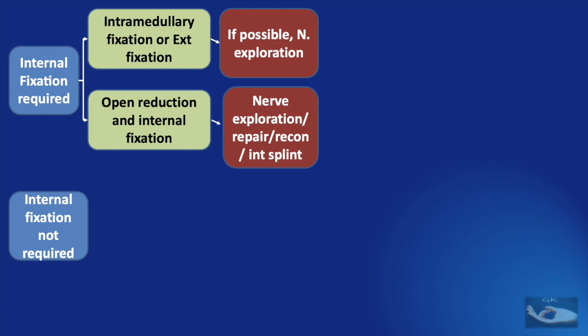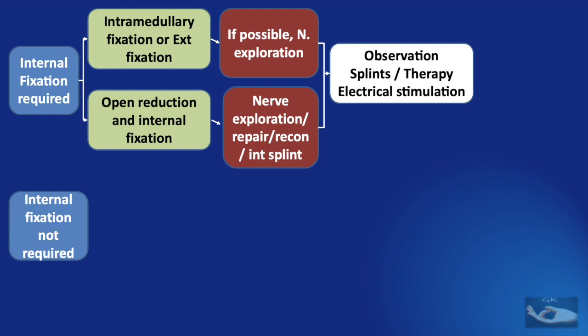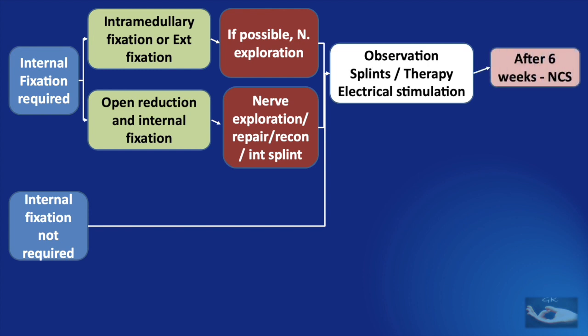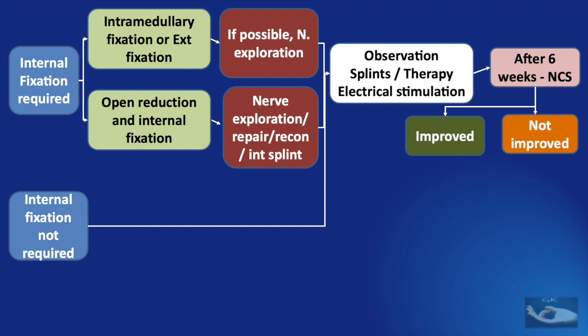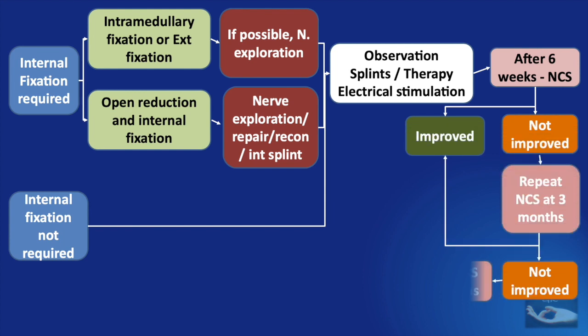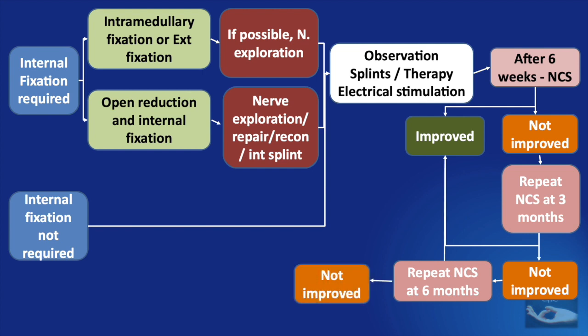If necessary, internal splinting can be done according to the principles elucidated in the video on the decision making process. Even if the nerve is not injured, care must be taken during the procedure to protect the nerve adequately. Whatever procedure has been done, it must be followed up with observation, adequate splints, therapy, and electrical stimulation. If the fracture does not require internal fixation, external support is given and must be followed up with observation, splints, therapy, and electrical stimulation. A nerve conduction study needs to be done after 6 weeks, again at 3 months, and at 6 months to look for improvement. If there is no recovery by 6 months, a tendon transfer should be planned.